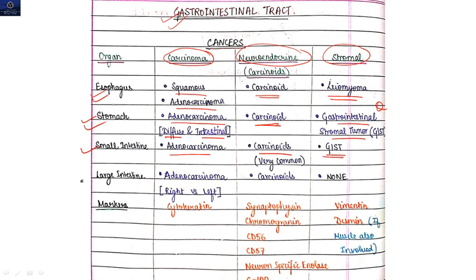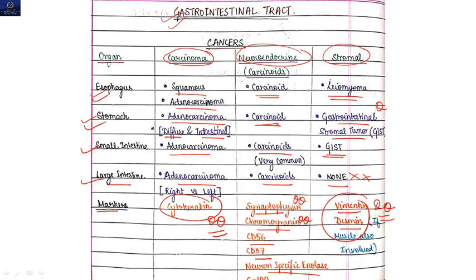For markers: cytokeratin is the marker for carcinoma. For neuroendocrine tumors: synaptophysin, chromogranin, CD56, CD57, and NSE. The two most important are synaptophysin and chromogranin. For stromal tumors: vimentin and desmin.